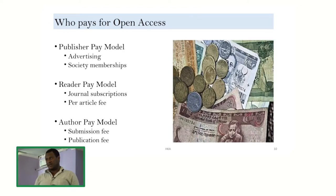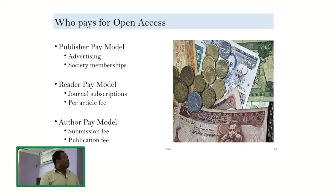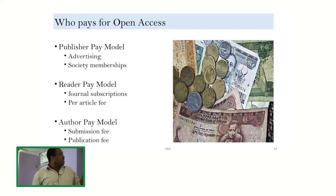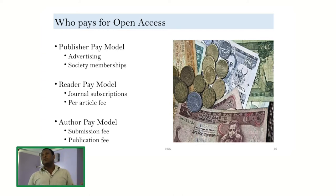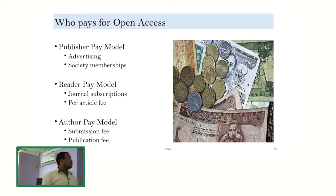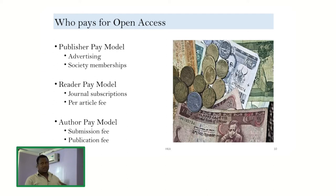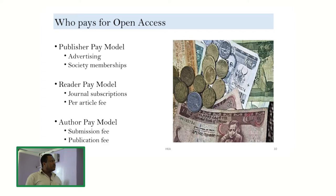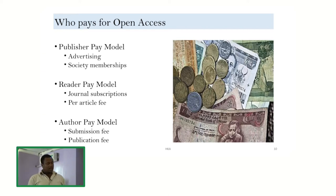How can payment work in open access? There are three models. The publisher pay model — the publisher covers costs through advertising revenue and societal membership, similar to how Facebook is free but collects revenue through advertising. The reader pay model — readers subscribe to or pay per article for open access journals. The author pay model — authors pay a submission or publication fee and the content is made open. So either the publisher, the reader, or the author may pay.